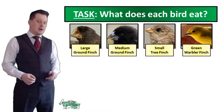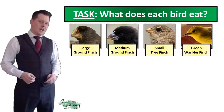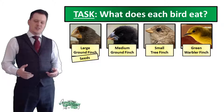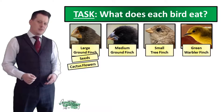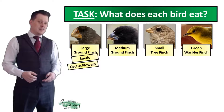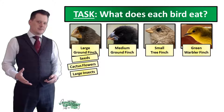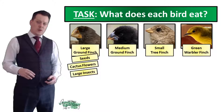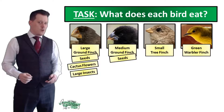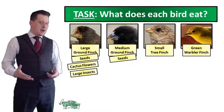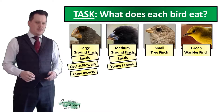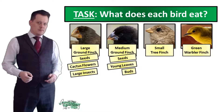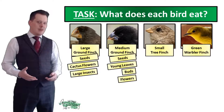The large ground finch eats seeds — its beak is big enough to crack open the shell — whole flowers off the cactus, and larger insects. The medium ground finch also has a very large beak and can crack open seed shells. It's not large enough to eat cactus flowers, but it will eat young leaves, buds before they bloom, and some smaller flowers.